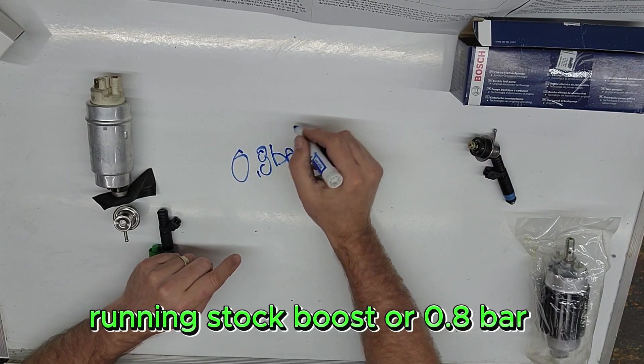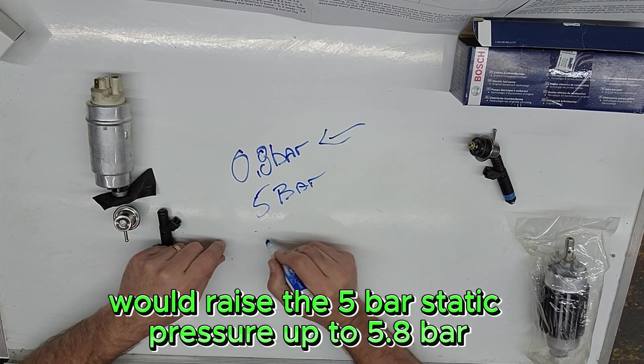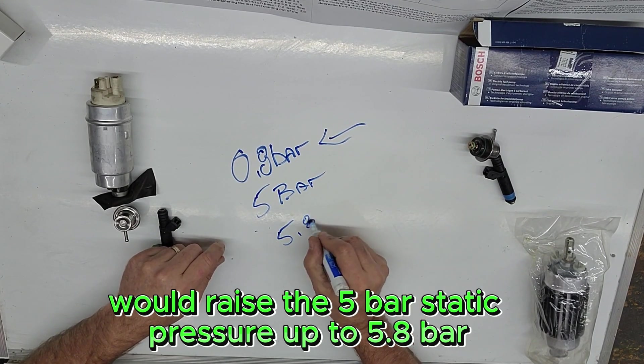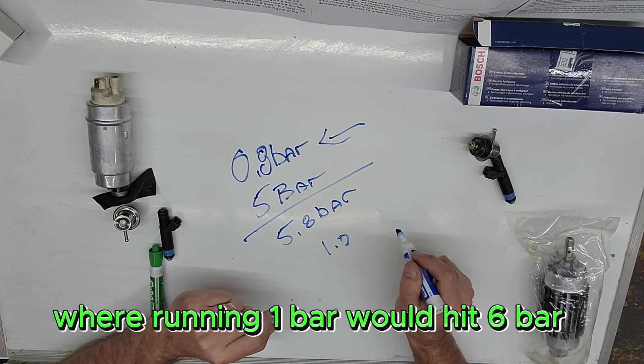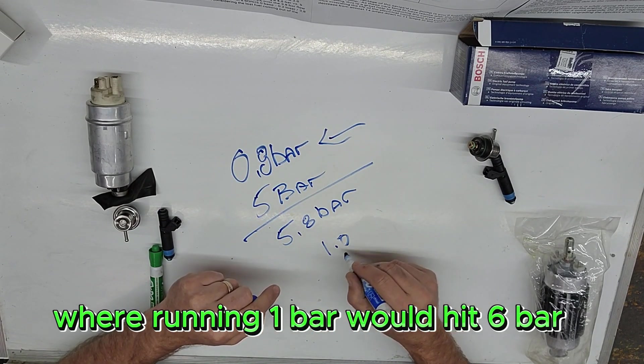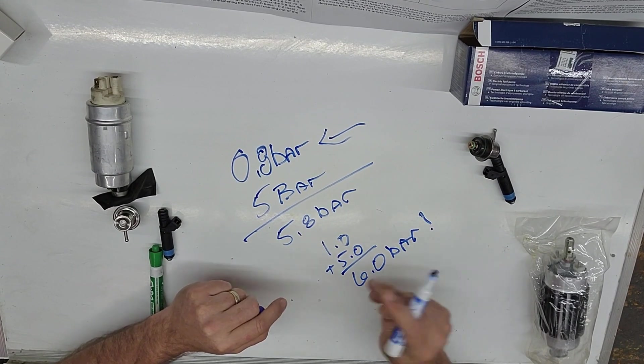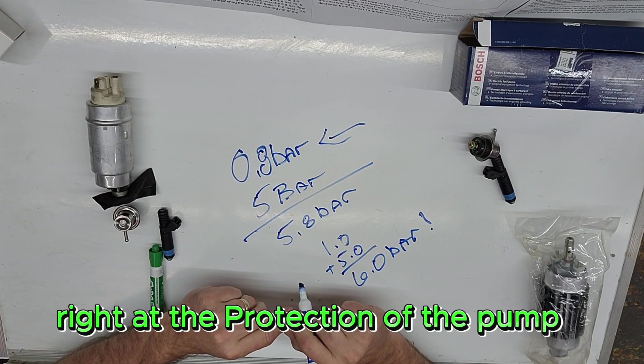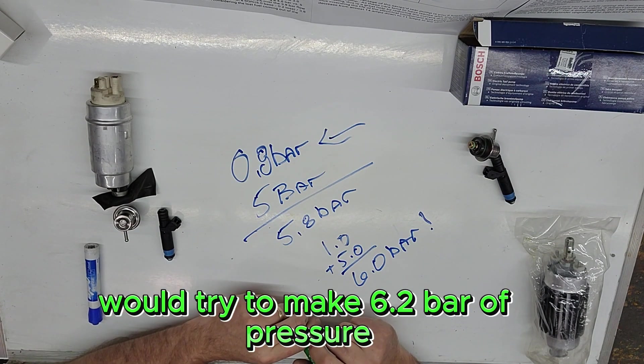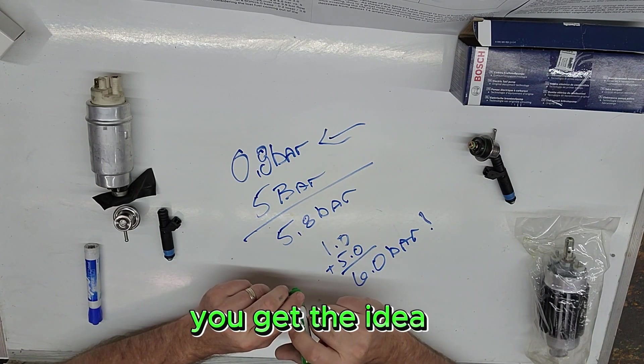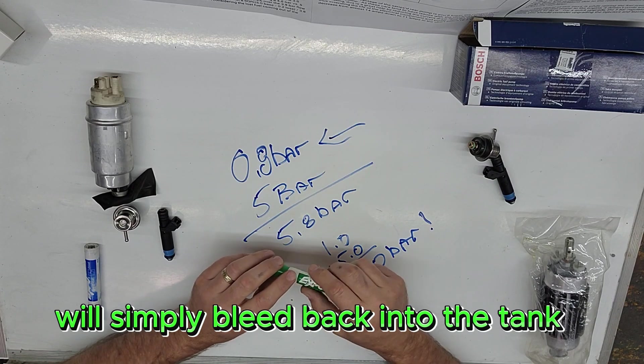Running stock boost, or 0.8 bar, would raise the 5 bar static pressure up to 5.8 bar. Where running 1 bar would hit 6 bar, plus 5 bar equals 6 bar, right at the protection of the pump. And 1.2 bar of boost would try to make 6.2 bar of pressure. You get the idea. But with the bleed off happening at 6 bar, you'll get stuck there and any extra fuel demand will simply bleed back into the tank.